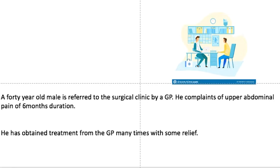Read this clinical history. It's a middle-aged person with upper abdominal pain for six months, so it has to be a chronic pathology. He was sent to the clinic by his GP who treated him for some time. As the problem was continuing, he was referred to make a diagnosis and plan the management.